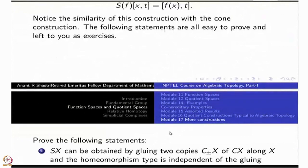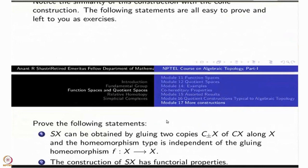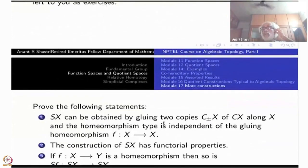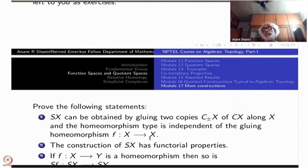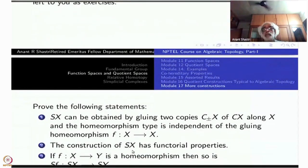Here are a few observations which I leave to you to think about. SX can be obtained by gluing two copies of CX — call them C⁺X and C⁻X — along X, which is X cross {1} identified. The homeomorphism type is independent of the gluing homeomorphism f from X: you can take any homeomorphism and identify C⁺ with C⁻ of X, and the resulting space is always homeomorphic to SX. The construction of SX is functorial — if f is a homeomorphism, then Sf will also be a homeomorphism.